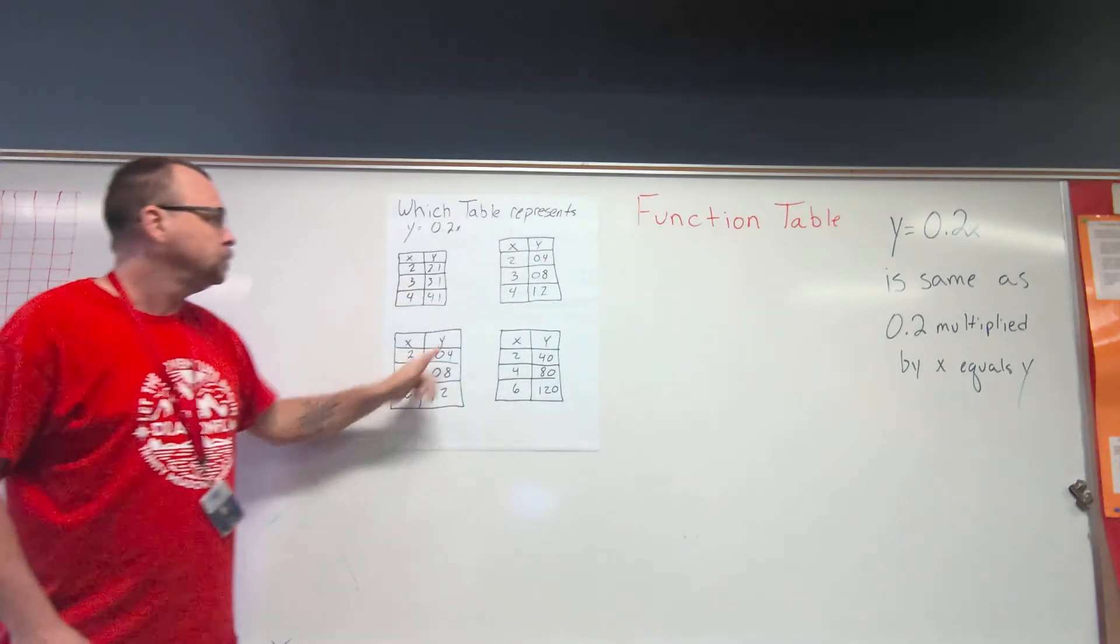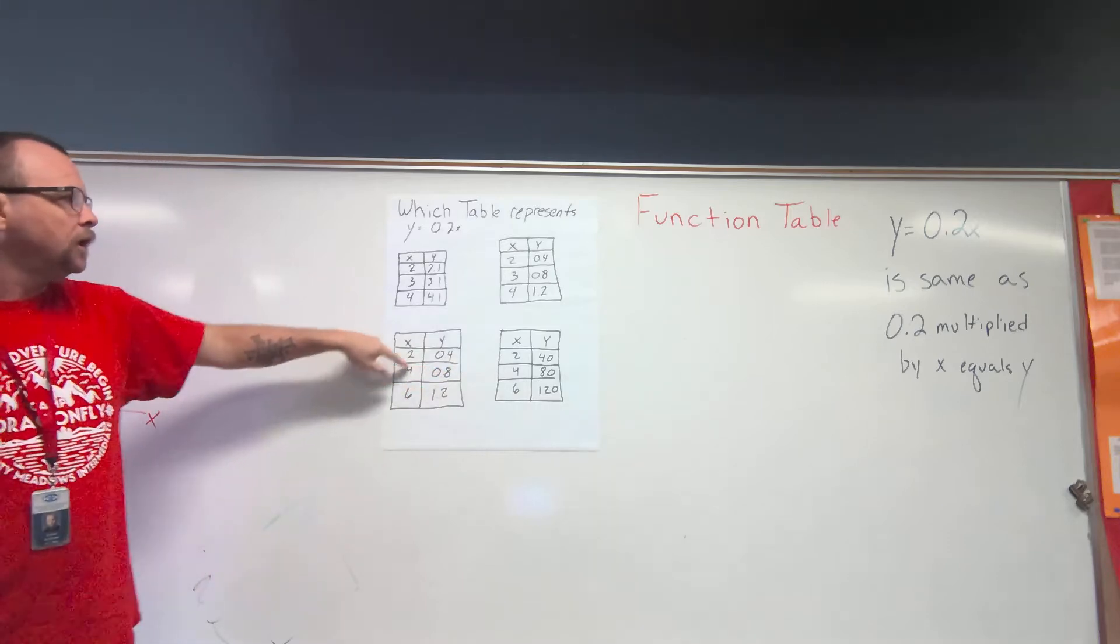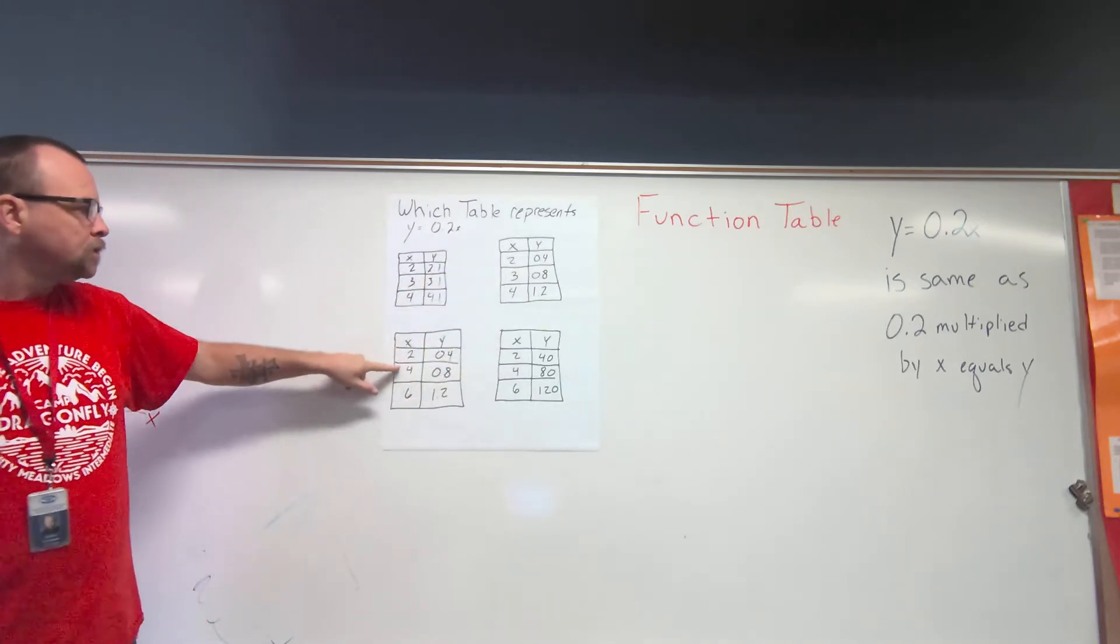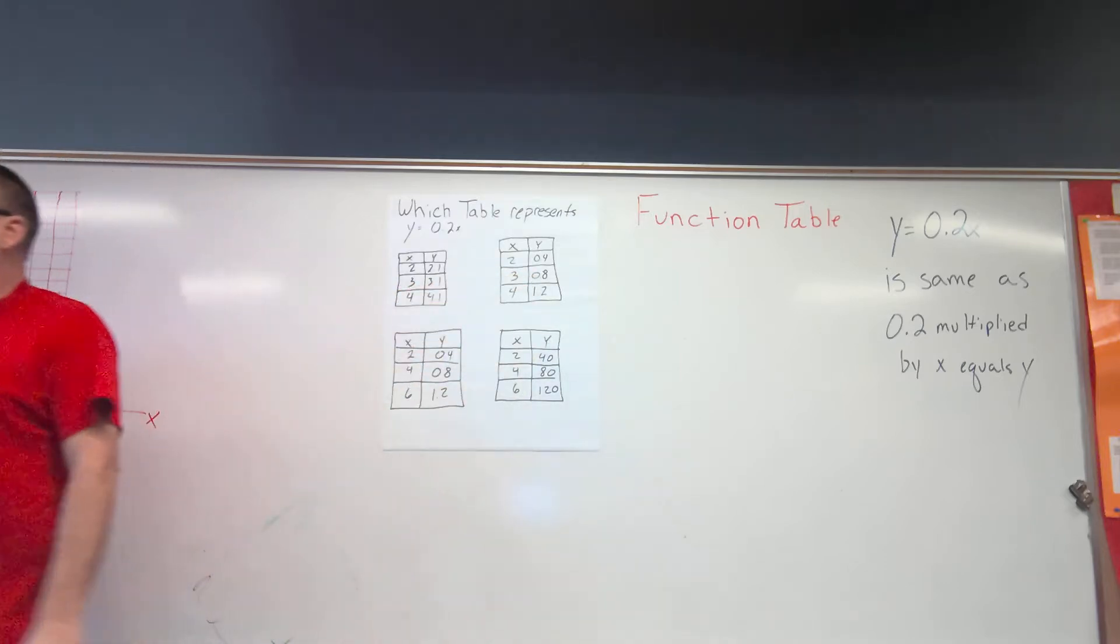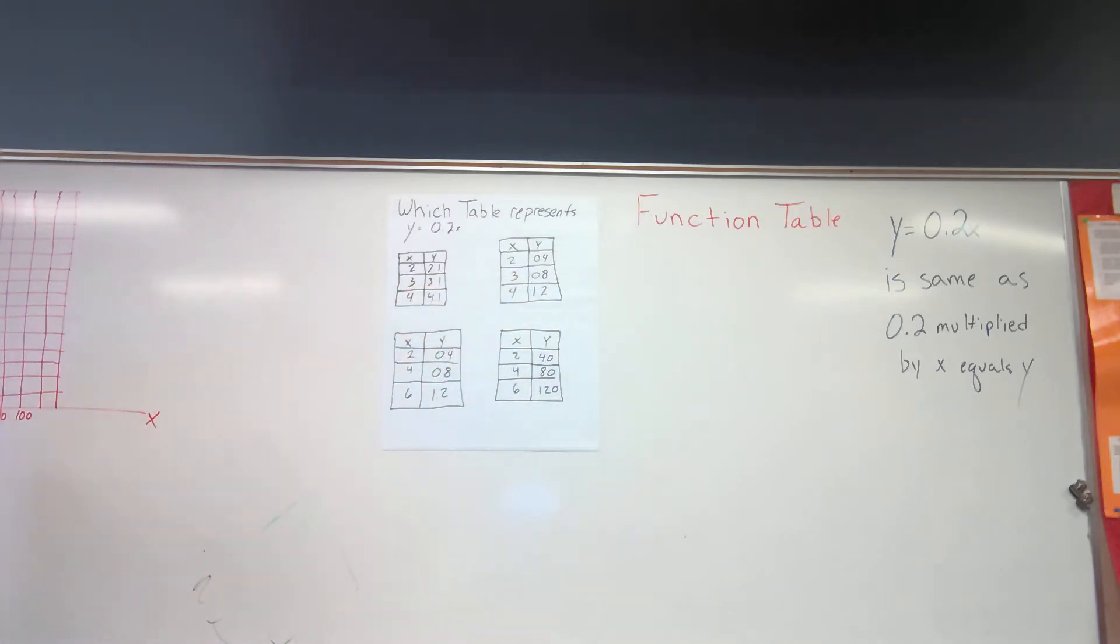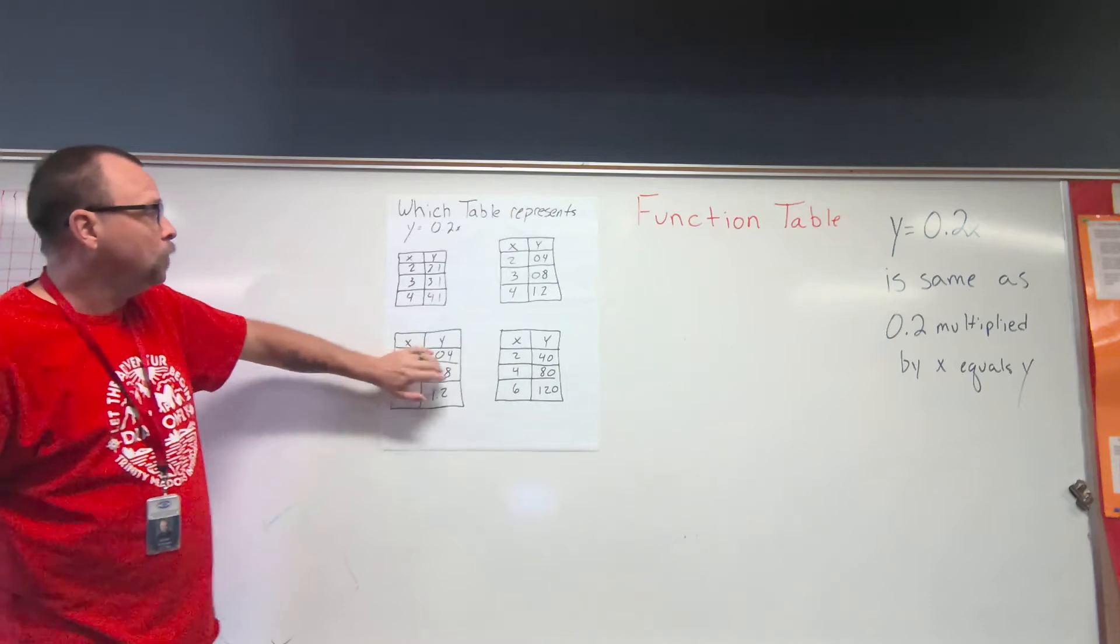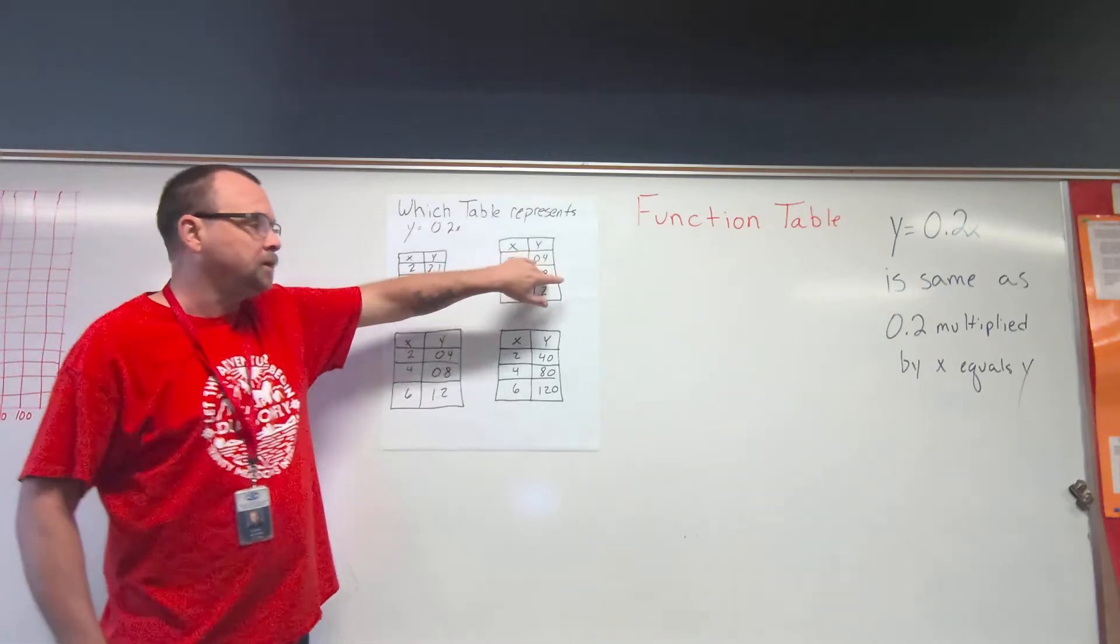So one of these two is going to be wrong starting at the four, starting in the middle part of my table. All I've got to do really is see: does four equal eight tenths or three equal eight tenths?